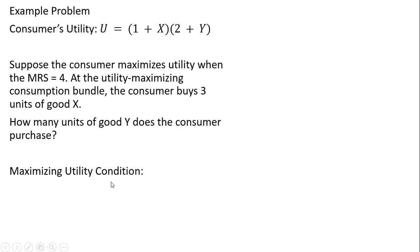So the maximizing utility condition from the last slide was given as follows. And so we know that the marginal rate of substitution is 4. I could have made any other number up here, but 4 is as good as any.